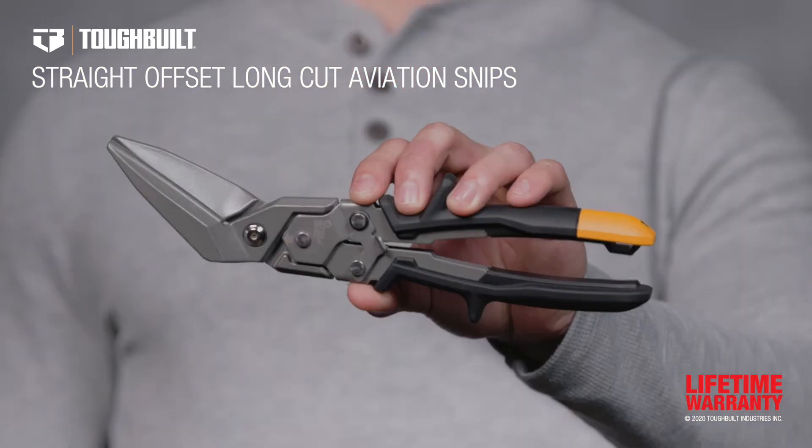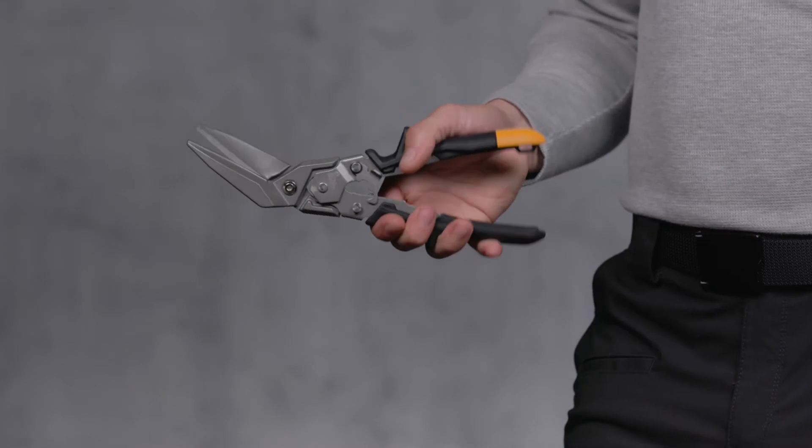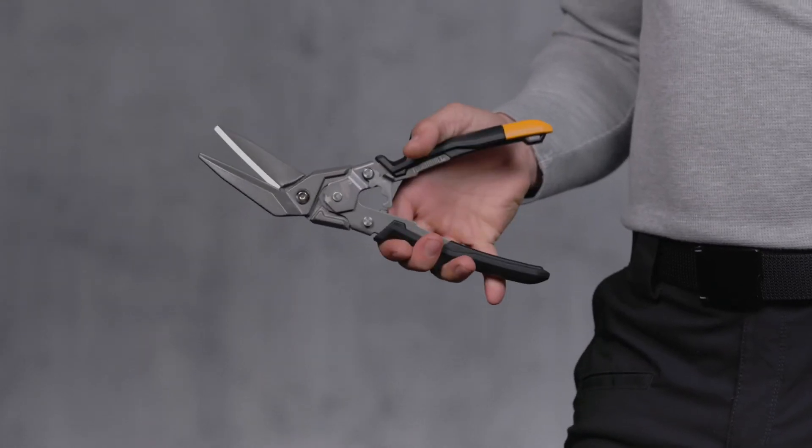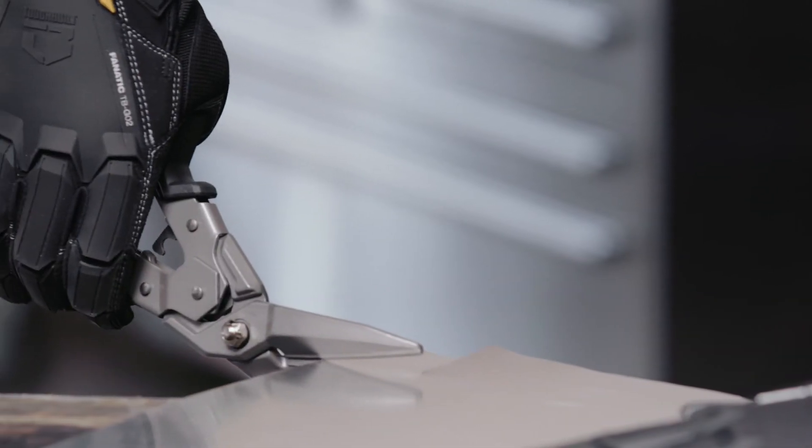These are the Tough Built Straight Offset Long Cut Aviation Snips. These ultra-durable snips are ideal for long straight cuts. Its forged blades allow up to 10 times more cuts than cast blades.